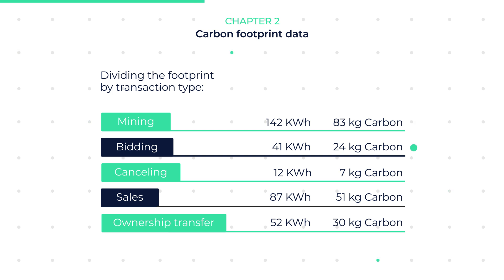Cancel bid — 12 kWh, 7 kilograms of carbon. Sale — 87 kWh, 51 kilograms of carbon. Transfer of ownership — 52 kWh, 30 kilograms of carbon.